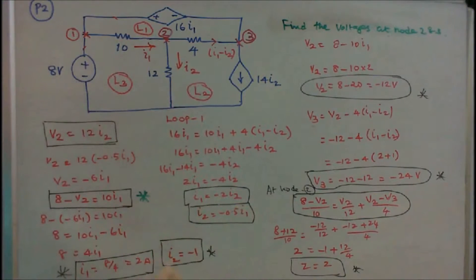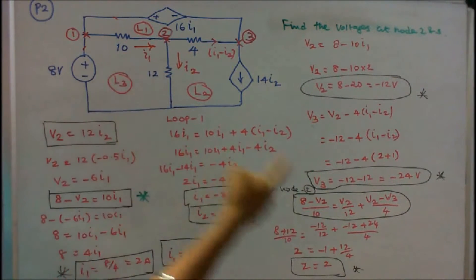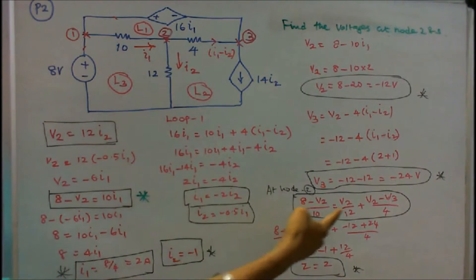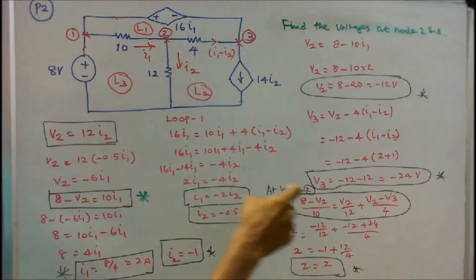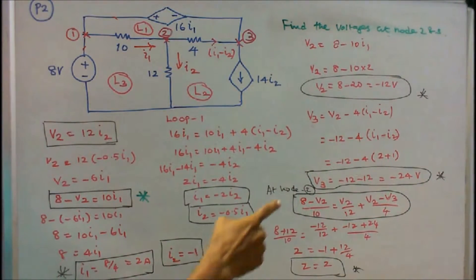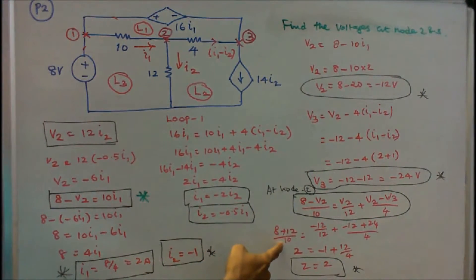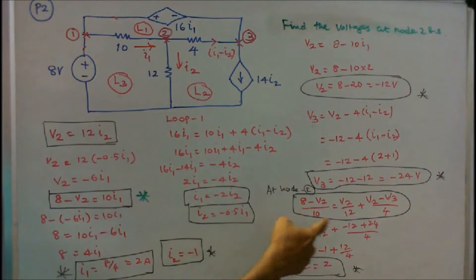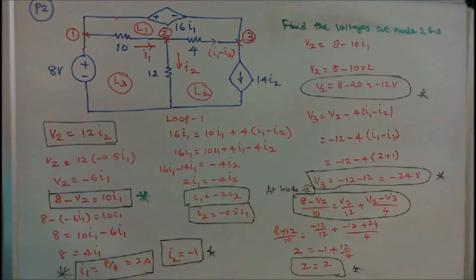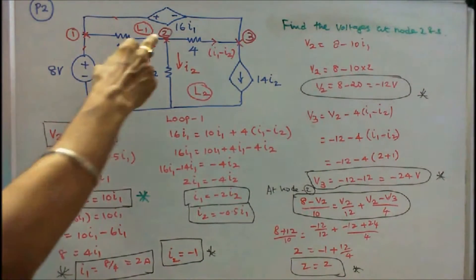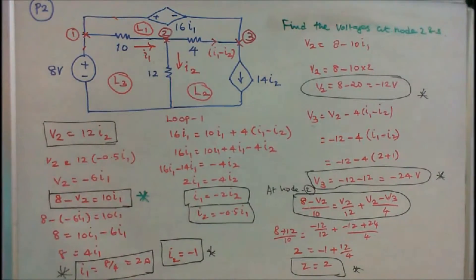At node 2 I verify: (8 minus V2) divided by 10 is equal to V2 by 12 plus (V2 minus V3) by 4. With V2 equal to minus 12: (8 plus 12) divided by 10 equals 20/10 equals 2. And minus 12 divided by 12 equals minus 1, plus (minus 12 plus 24) by 4 equals 12/4 equals 3. So 3 minus 1 equals 2. Kirchhoff's current law is verified. At node 2 the voltage is minus 12 volts, at node 3 the voltage is minus 24 volts.